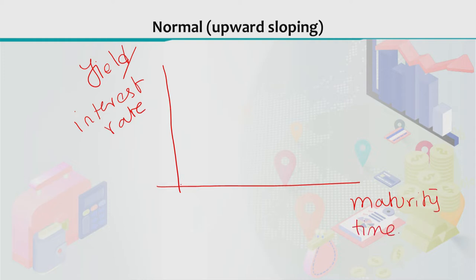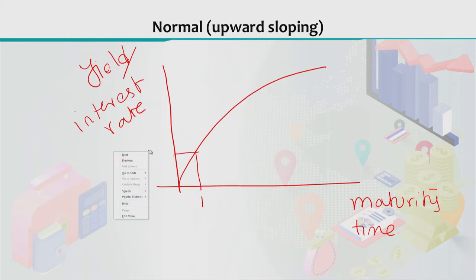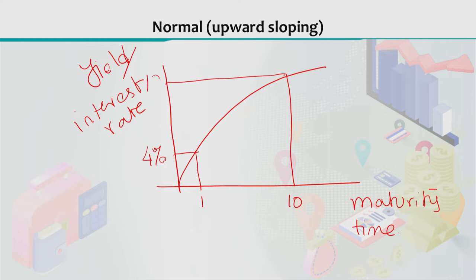So it shows that if a bond is going to mature in, for example, one year, the interest rate it is going to yield is, for example, four percent. But if we are talking about a bond which will mature in, say, ten years, naturally the yield or the interest rate which we are going to get from this particular bond, which is going to mature in ten years, will be twelve percent. So if the maturity time period is longer, we are going to have a higher interest rate, and as a consequence we get this upward sloping yield curve.